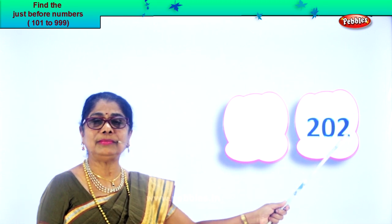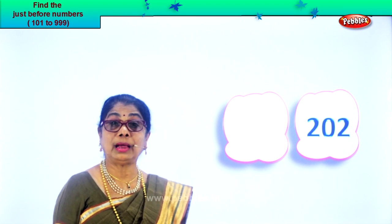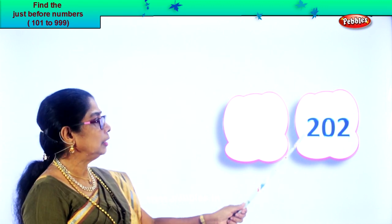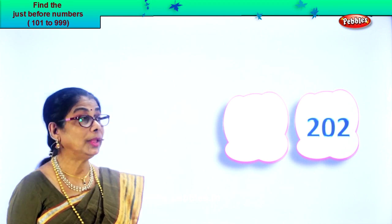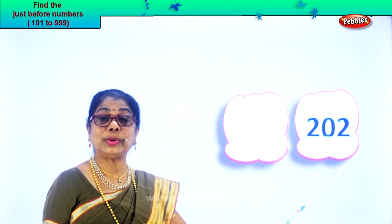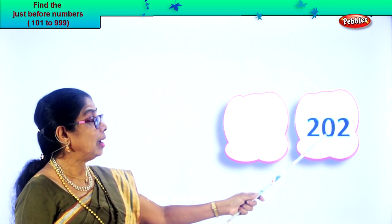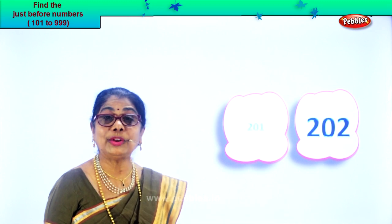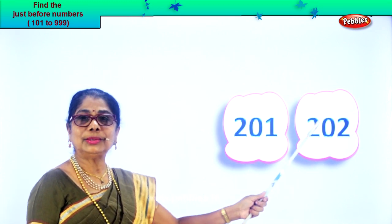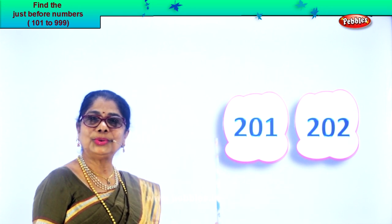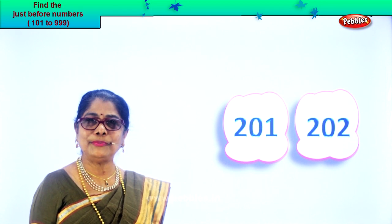Here you have two in the ones place, zero in the tens place, and two in the hundreds place. Read the number: two hundred and two. Take the ones place — two. One less than two is one. So two hundred and one is the number before. Two hundred and one, two hundred and two. How easily you found the number before!